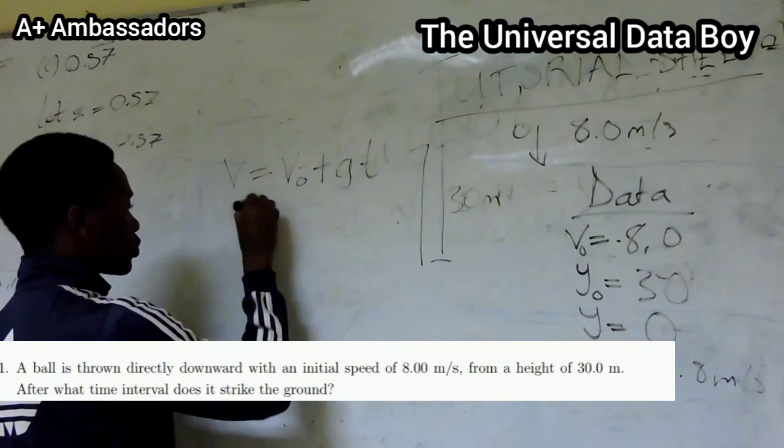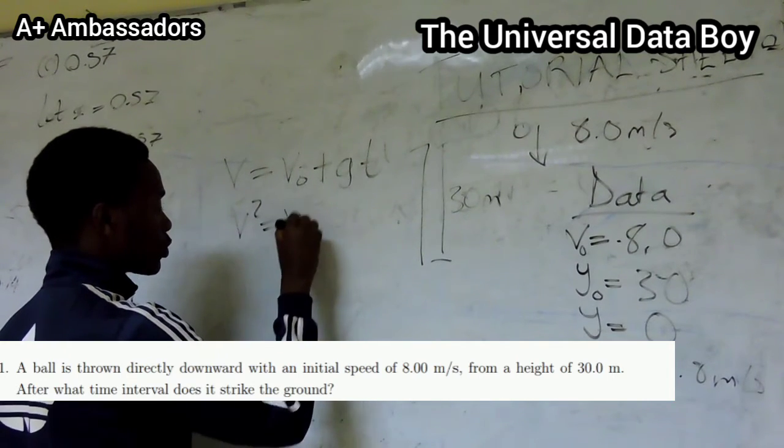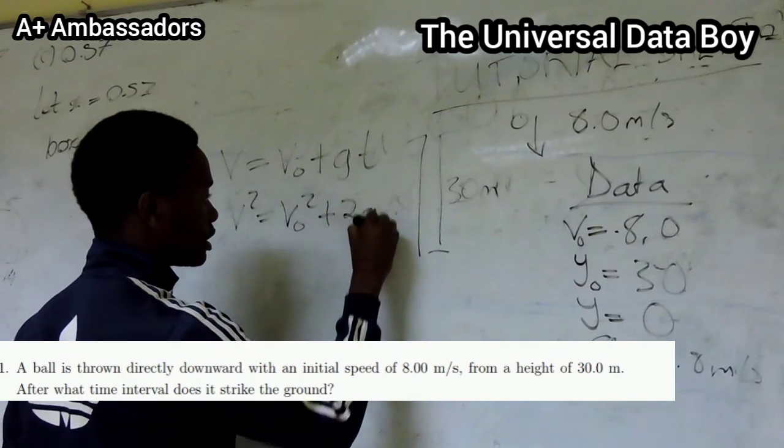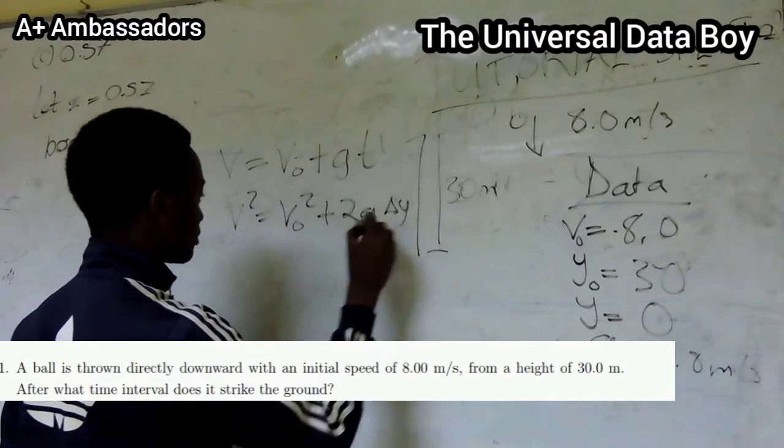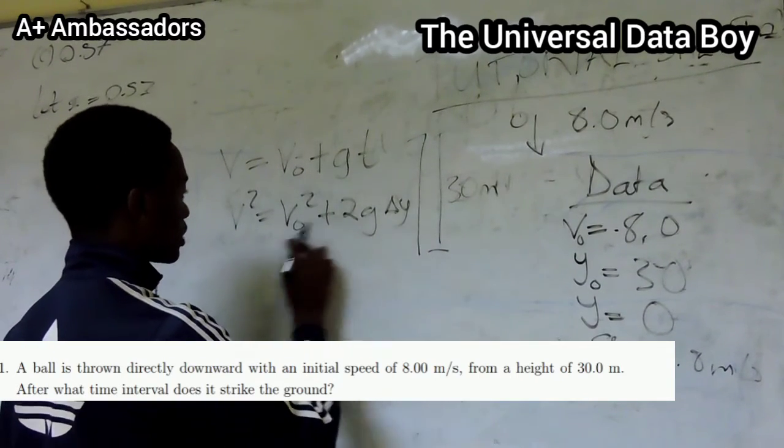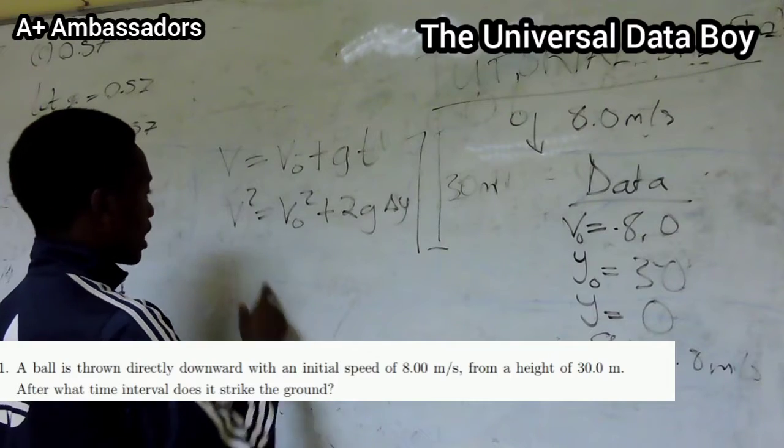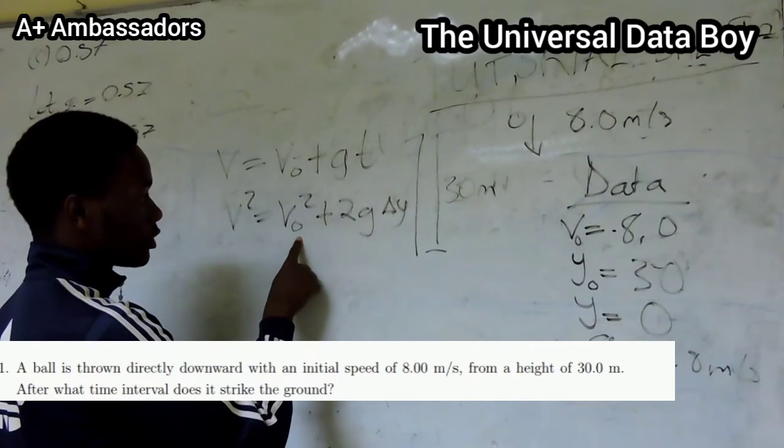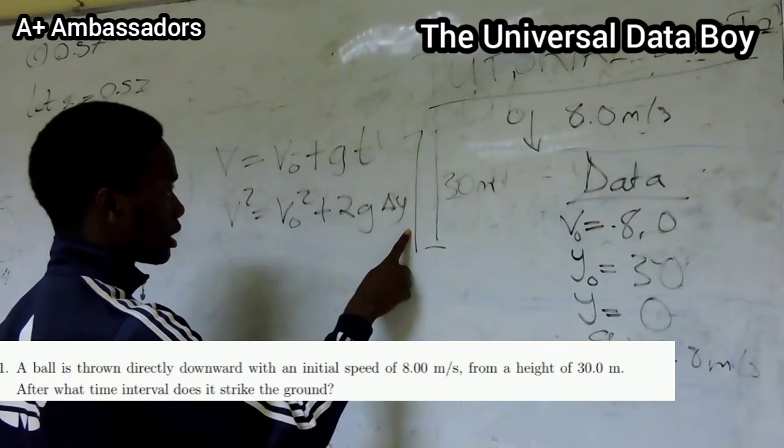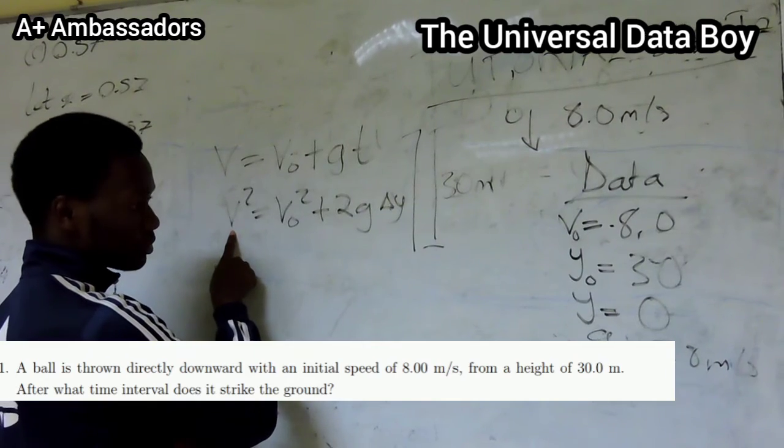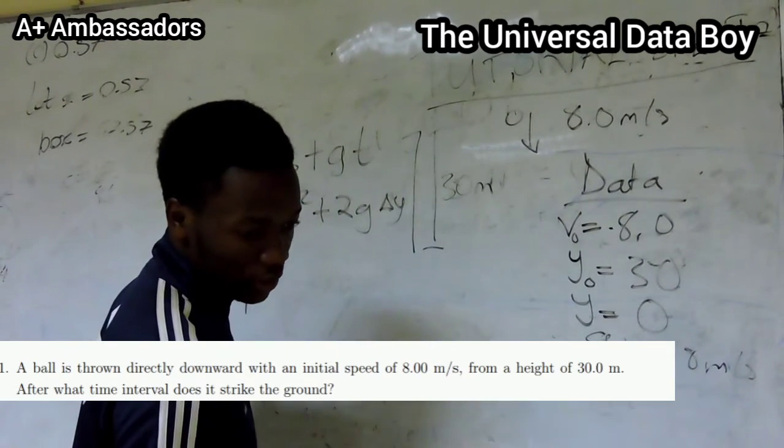When we look at our other equation, we have V² = V₀² + 2g(Δy). This one can work out because we have our V₀, we have our g, and we have our change in Y. But we don't have our final velocity.